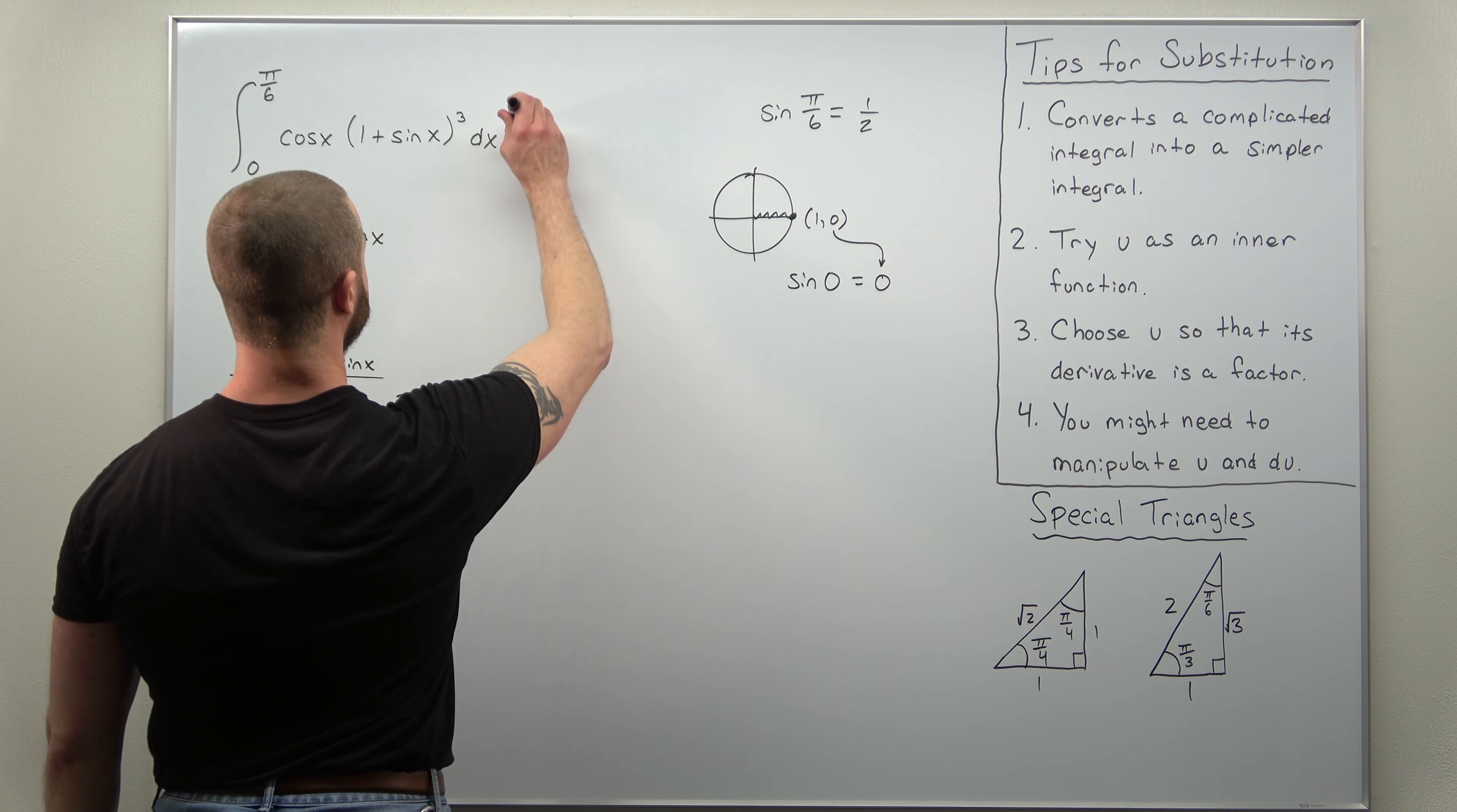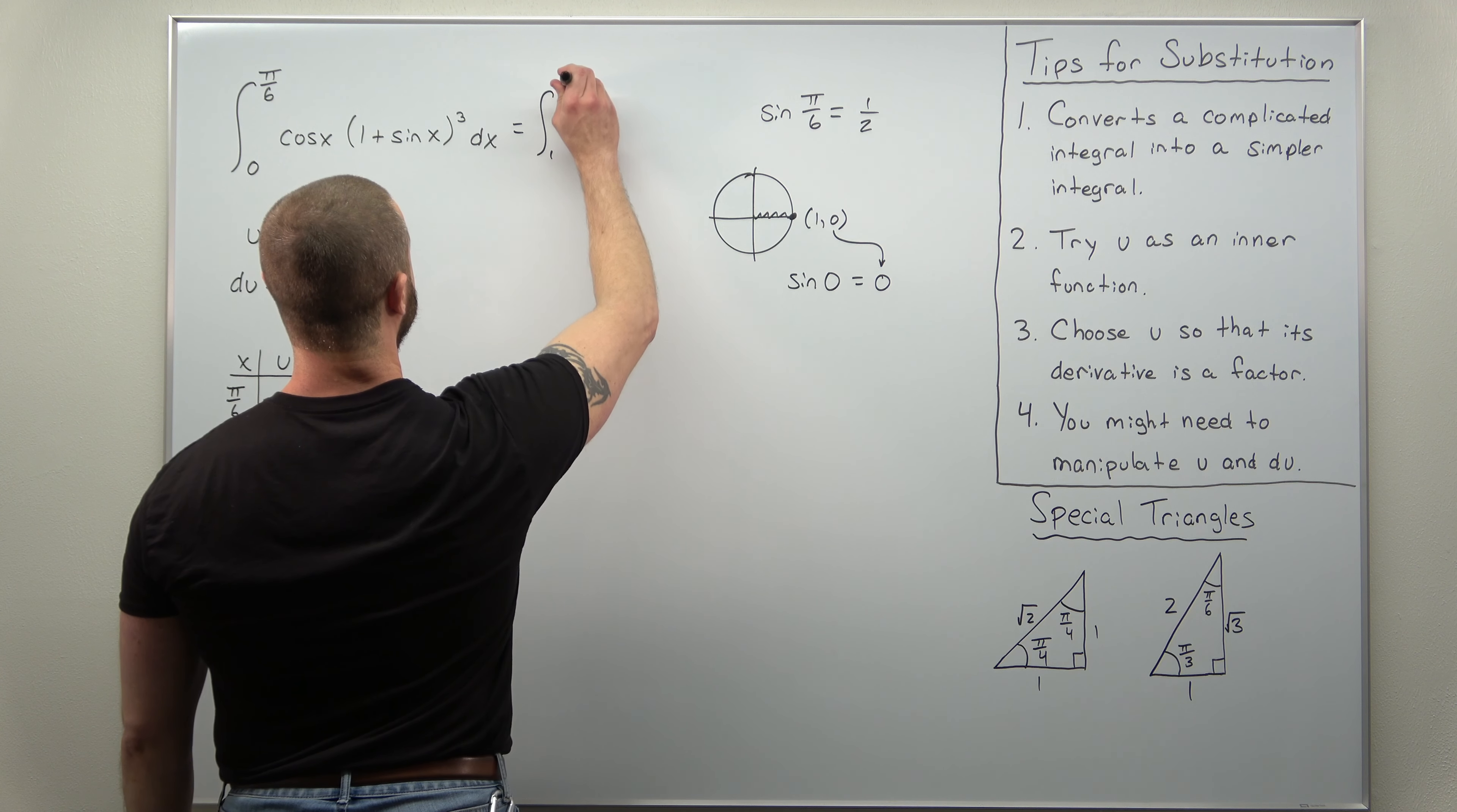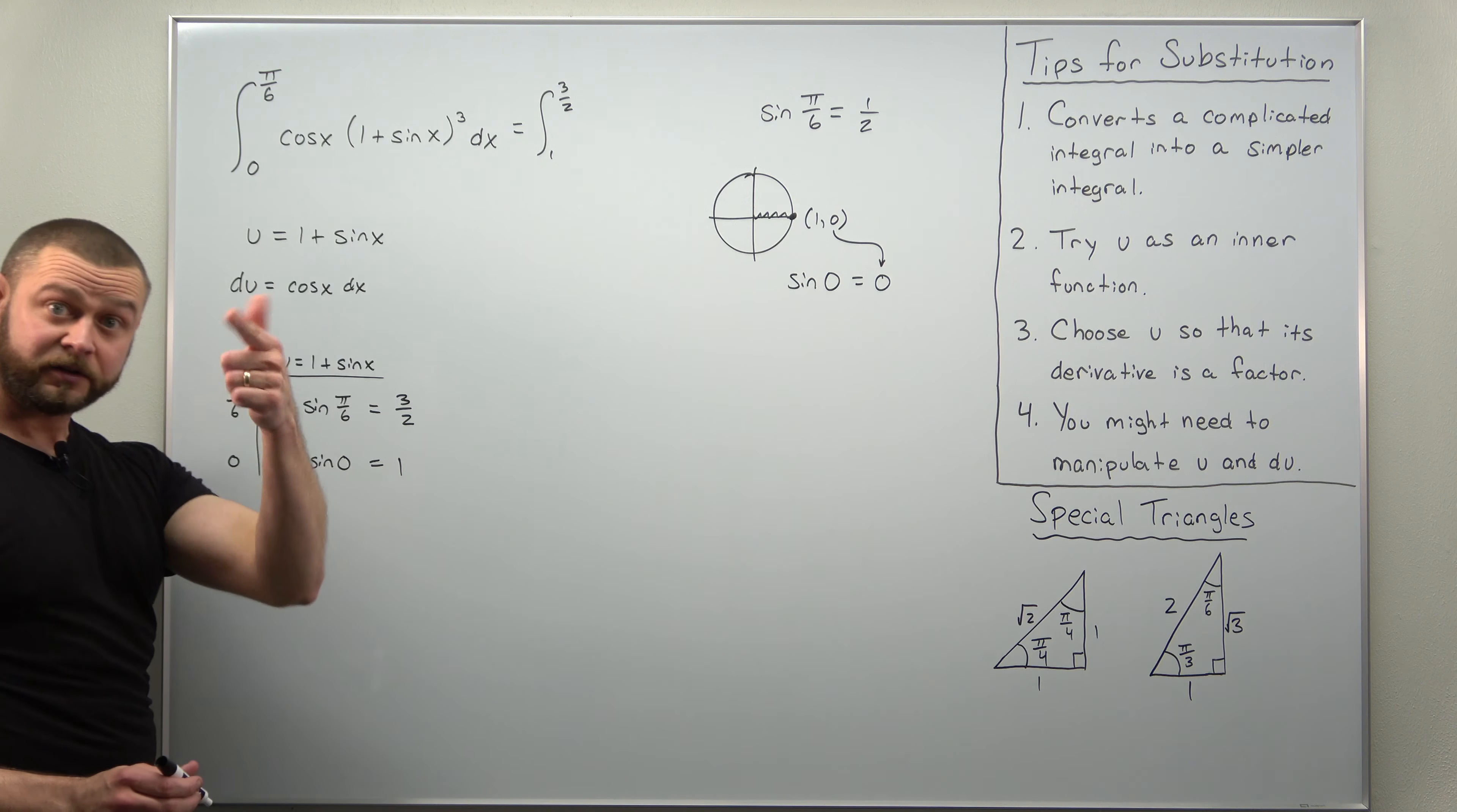Now if we go ahead and plug all this in, what we should have is an integral going from 1 to 3 over 2. Cosine of x dx converts to du, and 1 plus sine of x converts to u, so this part we're going to get u to the third power.